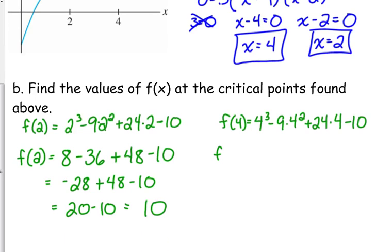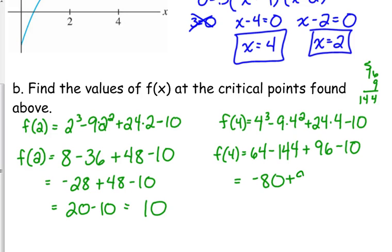f of 4. 4 cubed is 64. 4 squared is 16 times 9. I want to miss that one up. 9 times 4 is... 144. That's 96. So that's negative 80 plus 96 minus 10. So that's 16 minus 10. That is 6.